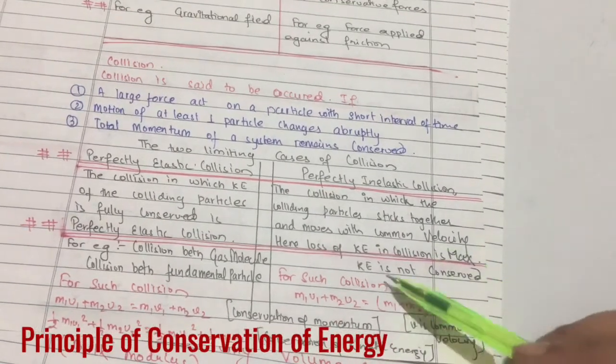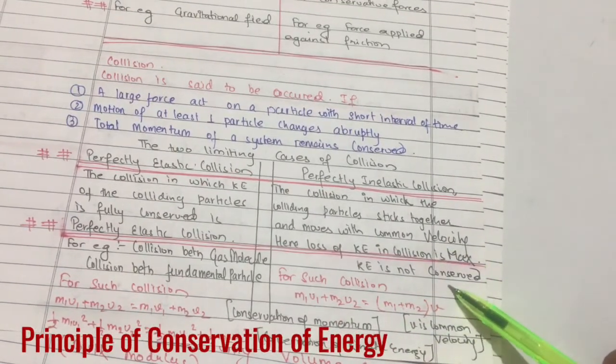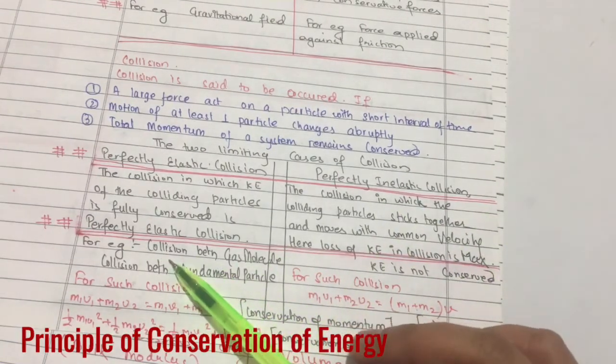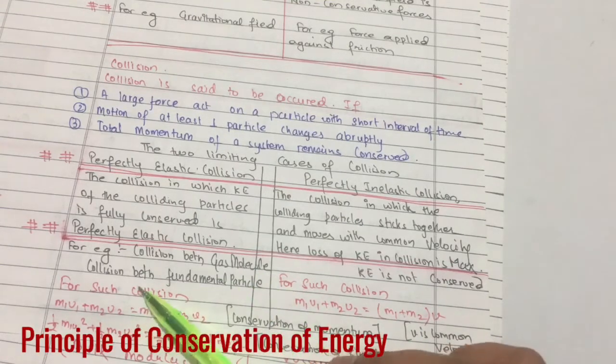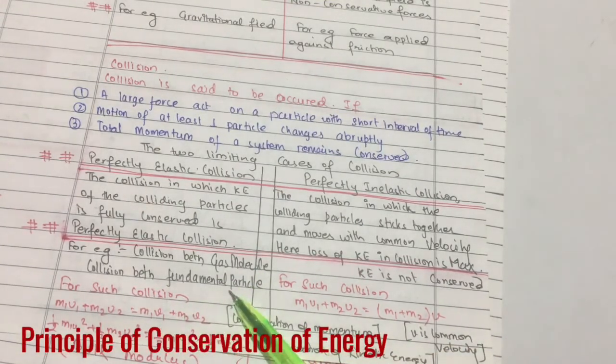Examples of perfectly elastic collision: collision between gas molecules and collision between fundamental particles like electrons, protons, and neutrons.